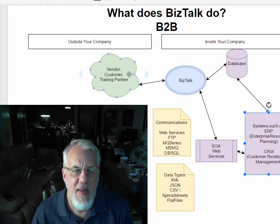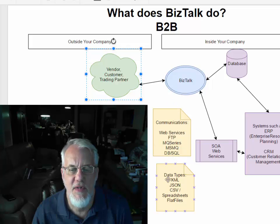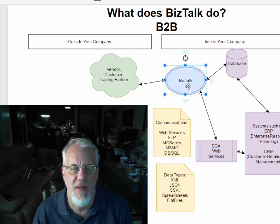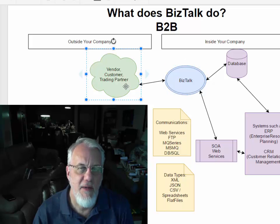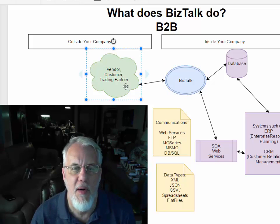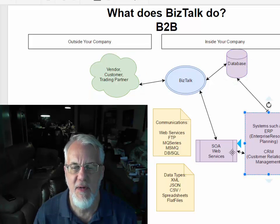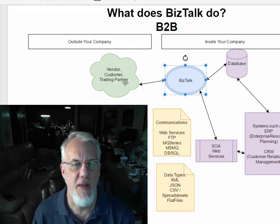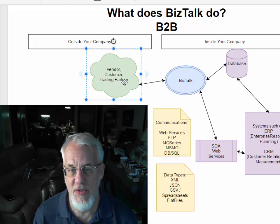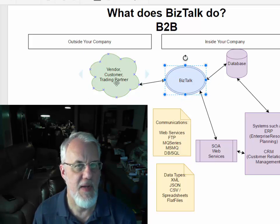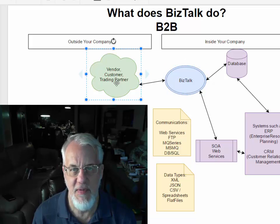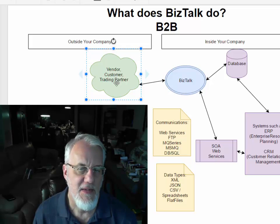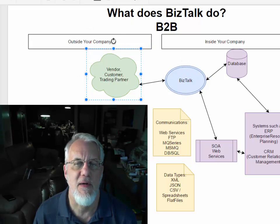You have data coming in through one of these communication methodologies and data types. You process the data in your system, and then oftentimes you acknowledge that data back to your external partner. As you work on the data in your company — like maybe they made an order — when that order is ready to ship, you send them a message saying you're about to ship it. And when you actually ship it, you send them another message saying it has shipped, they should expect it on a certain date, and here's their tracking number.